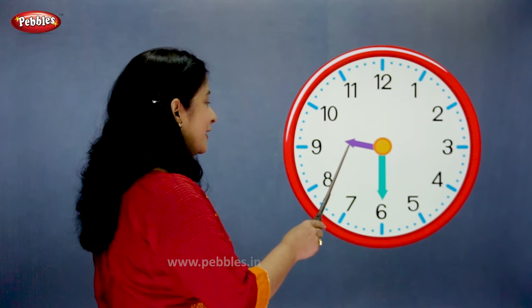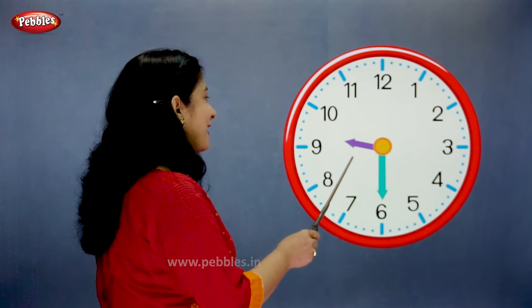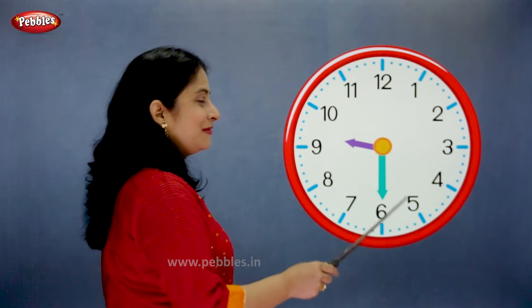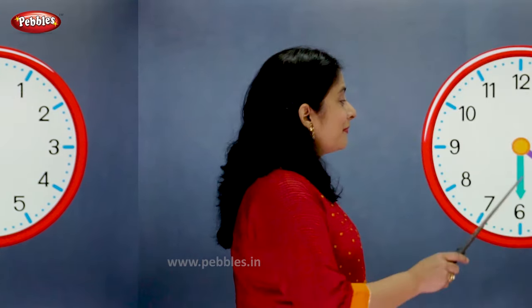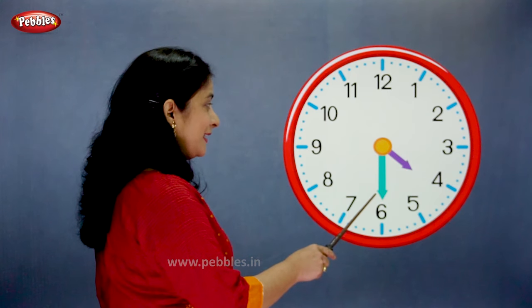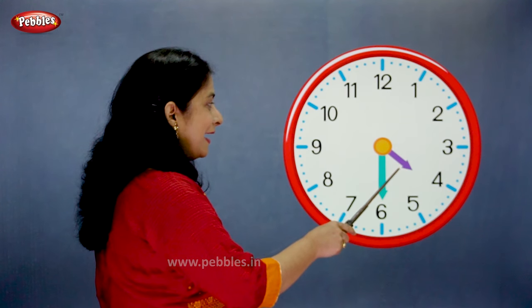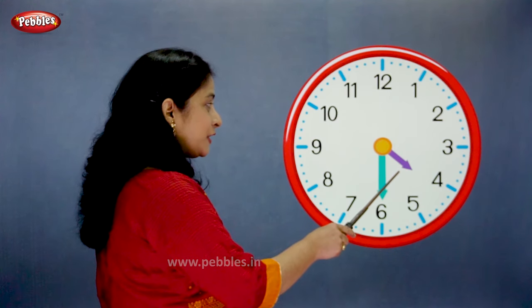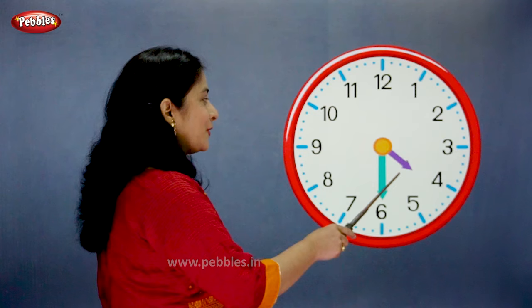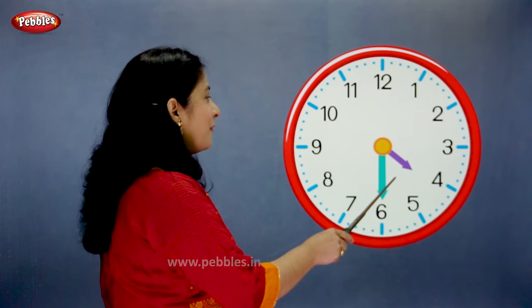So we say the time is half past 9. The minute hand is on 6. The hour hand has passed 4. So we say the time is half past 4.